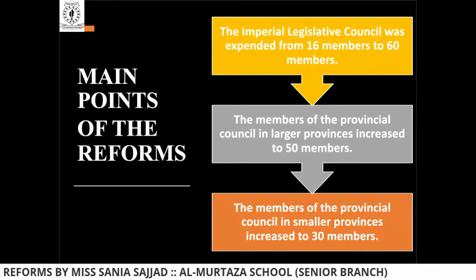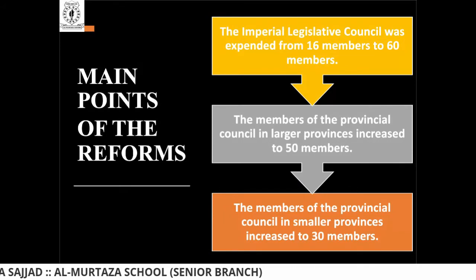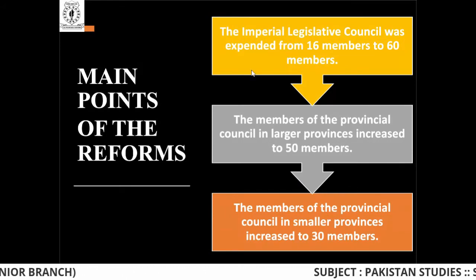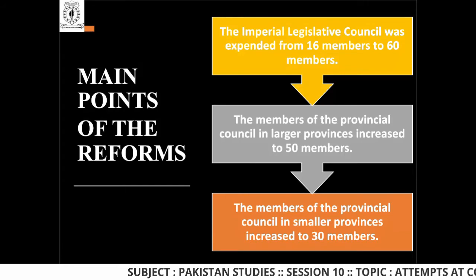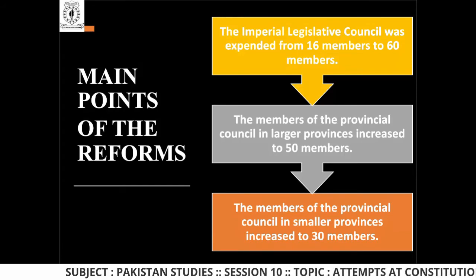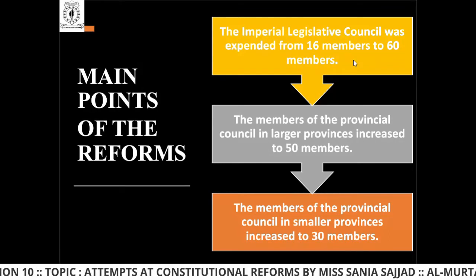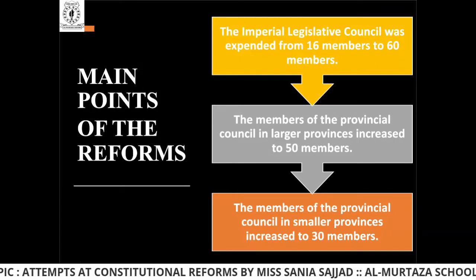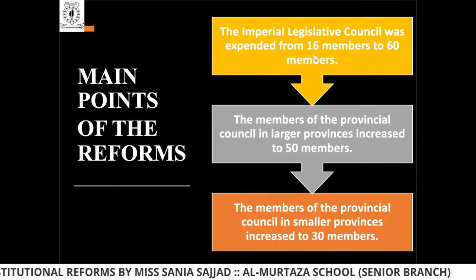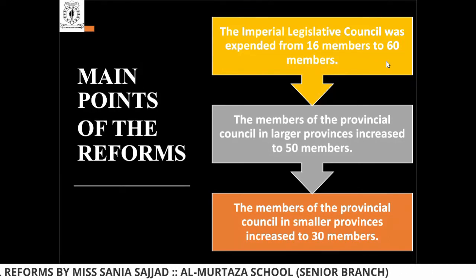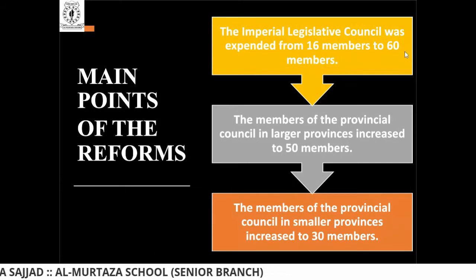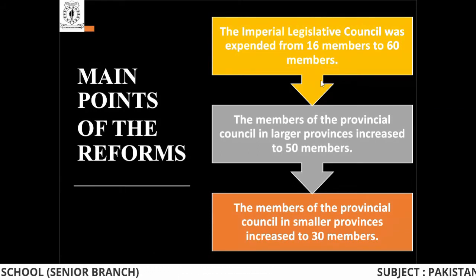The main points of the Morley-Minto Reform: Point one — the Imperial Legislative Council was expanded from 16 members to 60 members. The legislative council is basically the government body that decides on policy. It was expanded from 16 to 60, and the major reason for this expansion was so Muslims could also participate.